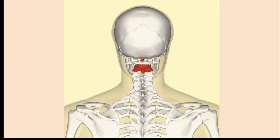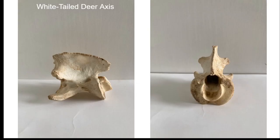The axis primarily allows the head to move side to side, while the atlas is used for up and down motion. Furthermore, the axis possesses a cylindrical body and a centrum, like the more typical neck vertebrae.